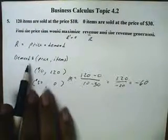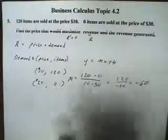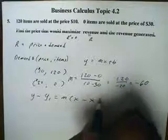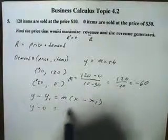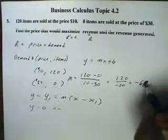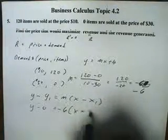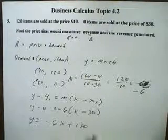I'm looking for a linear demand function of the form y = mx + b based on these points. Now that I have a slope and a point, I'm going to use the point-slope formula. For the y-value I'll put zero in, and for the slope, negative 6. So working through that gives us y equals negative 6x plus 180. This is our demand function.